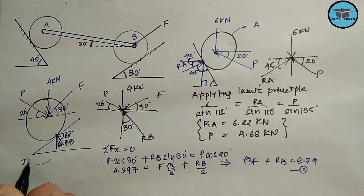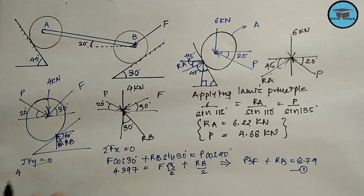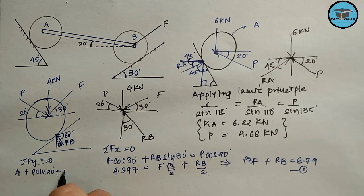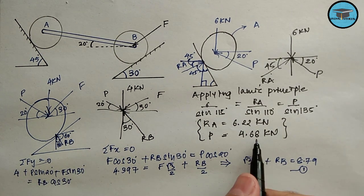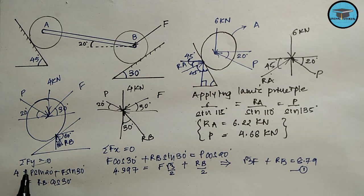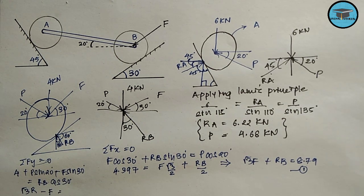Applying the second equilibrium condition, sigma F_y equals zero: 4 plus P sin 20 plus F sin 30 equals R_B cos 30. Substituting P equals 4.68 kN and multiplying through, we get √3 R_B minus F equals 11.2. Let us call this equation number two.